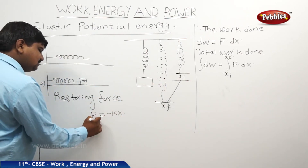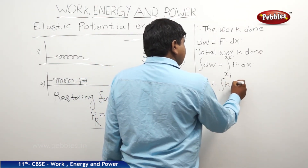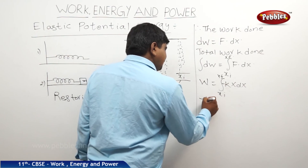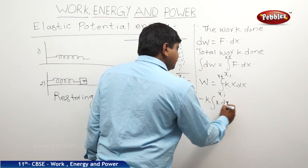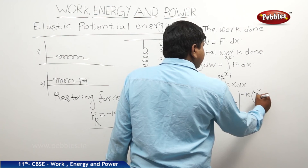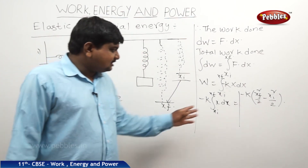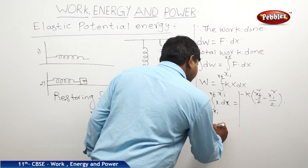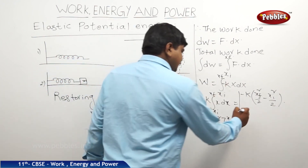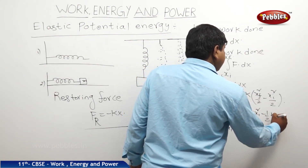We know that f is equal to minus kx. If it is restoring force, we can write it as fr. So therefore, W is equal to integral of minus kx dx from xi to xf. Taking minus k outside, it is minus k times integral of x dx from xi to xf. Therefore, it is minus k into (xf squared by 2 minus xi squared by 2), because the integral of x dx is x squared by 2, evaluated under the limits xi to xf.